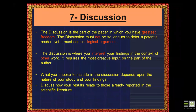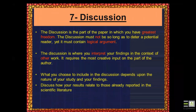What you choose to discuss depends upon the nature of your study and your findings. Discuss how your results relate to published work, how they are new, and what new contribution you have made. If you have done work that has been done before, the journal will reject it — they will say you have not found anything new. You must clearly show what is new and original in your work.